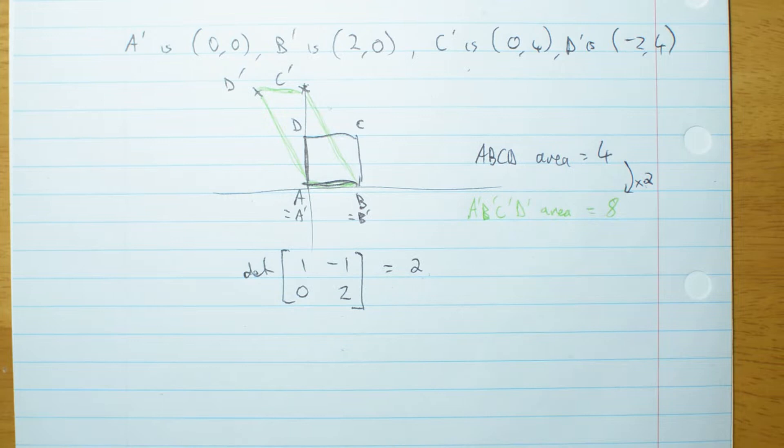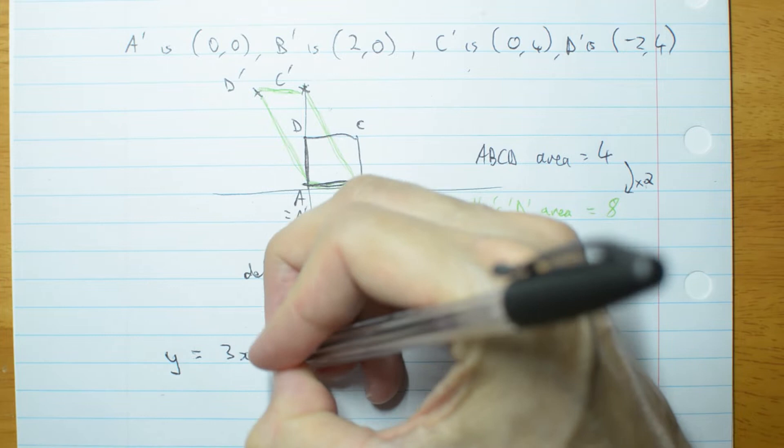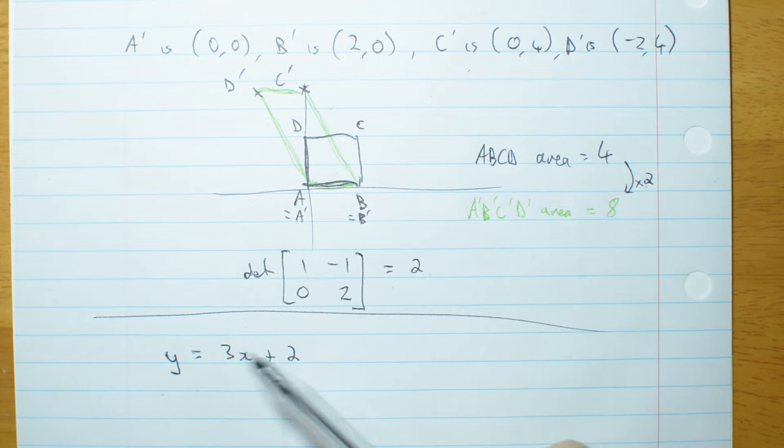Now let me show you a more trick as well. Suppose I take a line like y equals 3x plus 2. I'm going to put a line here because it's different.